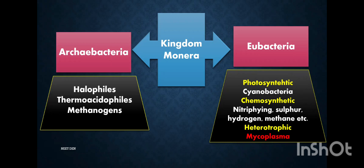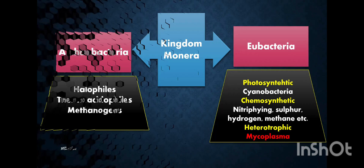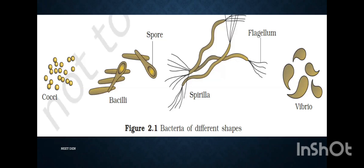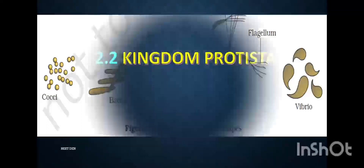Bacteria are also divided into types based on their shape: cocci, bacilli, spirilla, and comma-shaped bacteria called vibrio. Bacteria mostly reproduce by binary fission, an asexual mode of reproduction. Under unfavorable conditions, they produce spores, also asexually. Sometimes they reproduce by a somewhat sexual mode — gaining DNA material from outside — but this is rare.